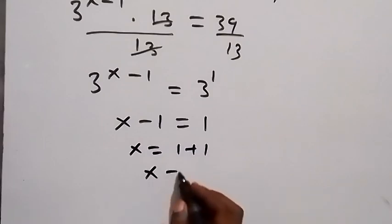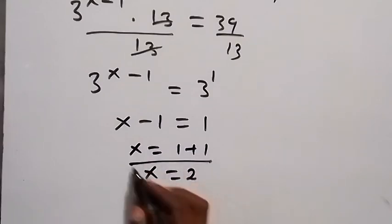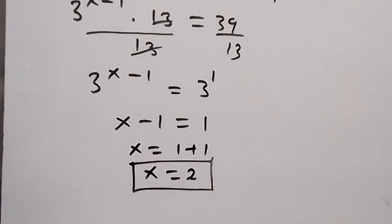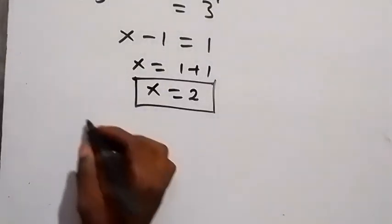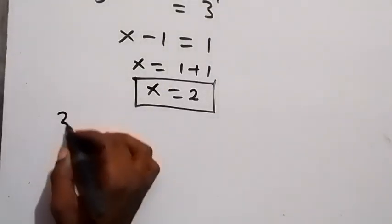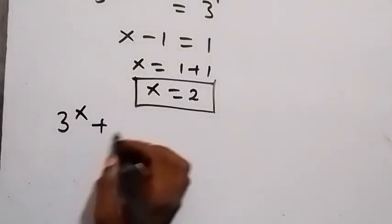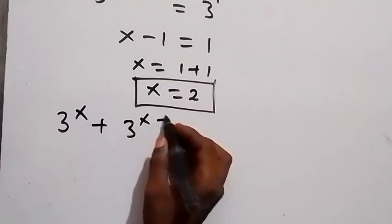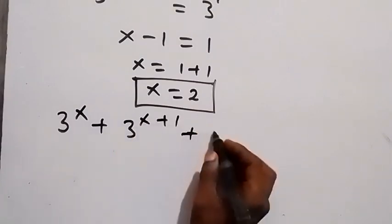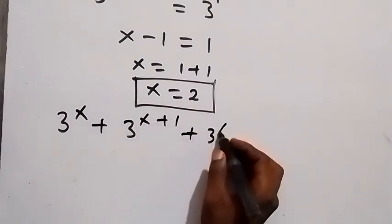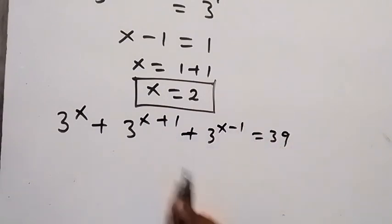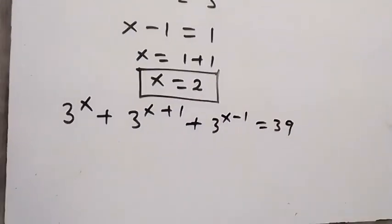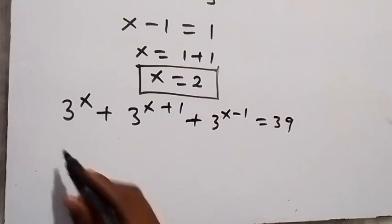Now to verify and check: from what we were given, we have 3 raised to power x, plus 3 raised to power x plus 1, plus 3 raised to power x minus 1, equals 39. Let's put x equals 2. This becomes 3 squared...